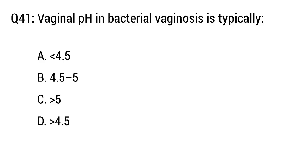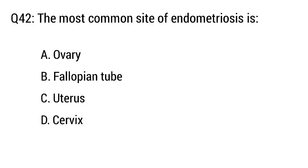Question number 41. Vaginal pH in bacterial vaginosis is typically — the right option is option A: greater than 4.5.